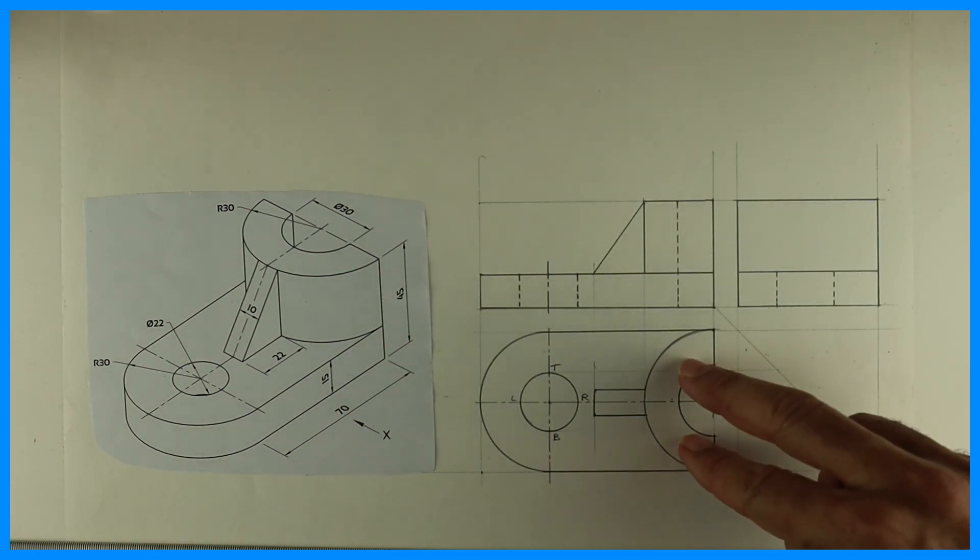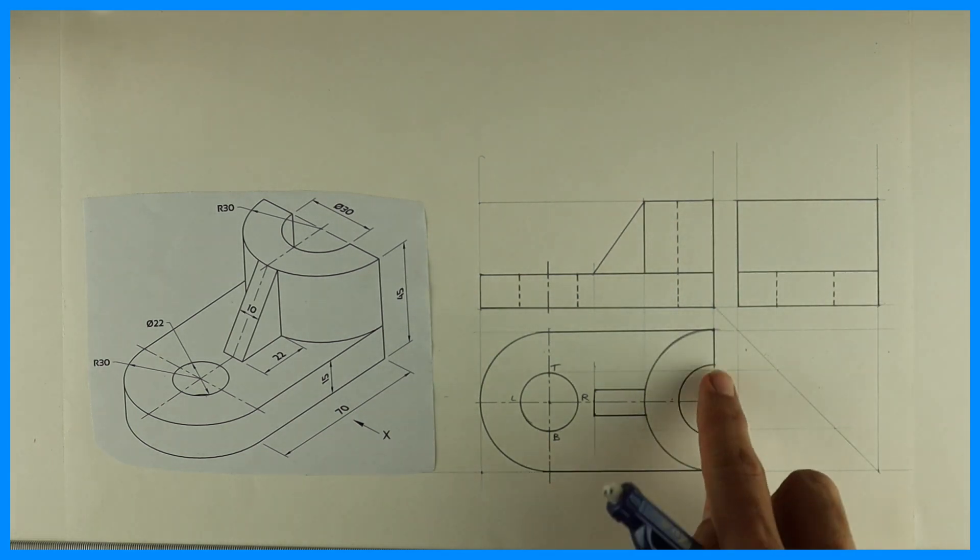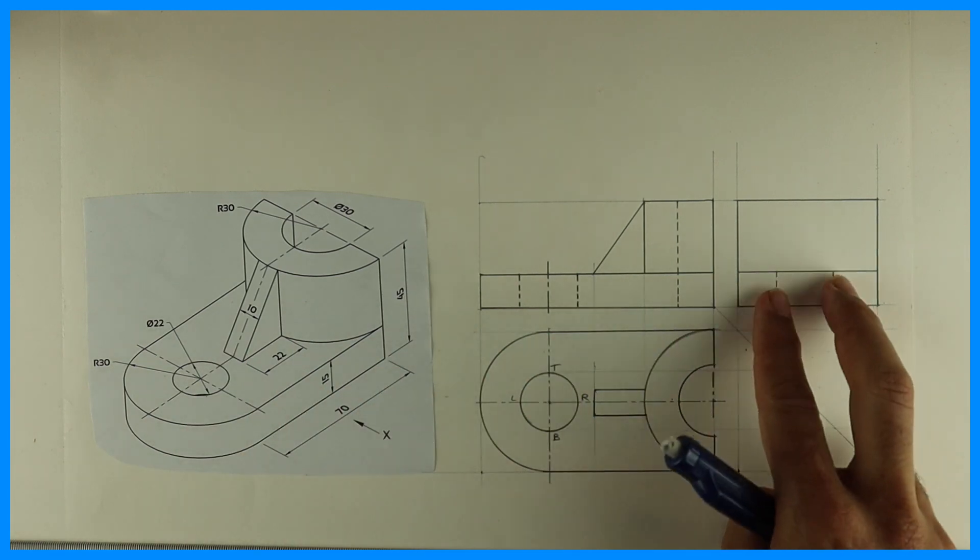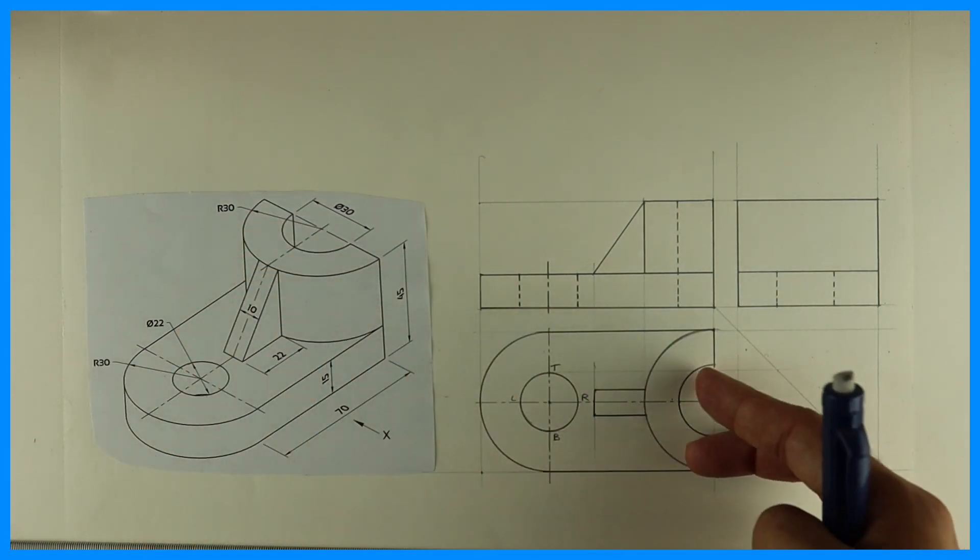Then we have this slope. See, this also behind part, also behind two lines also. This is going through and through, right? This is dotted, this is dotted, this is also dotted.